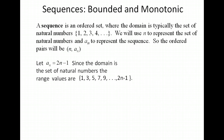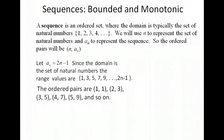For the second term, we plug in 2: 2 times 2 minus 1 gives us 3. So our second output value is 3. Plugging in 3 gives 5, and plugging in 4 gives 7. These are all our output values up to the nth term, which is 2n minus 1. That gives us ordered pairs: (1,1), (2,3), and so on — where n represents the x value and the output is the y value.